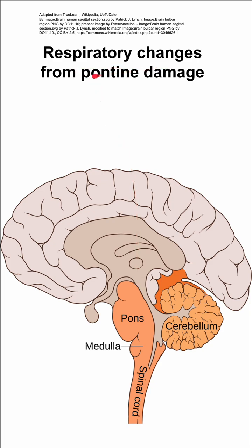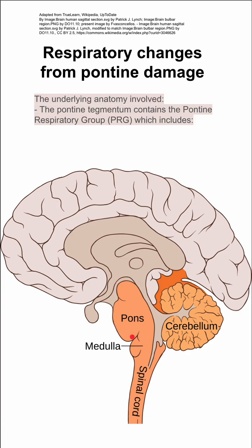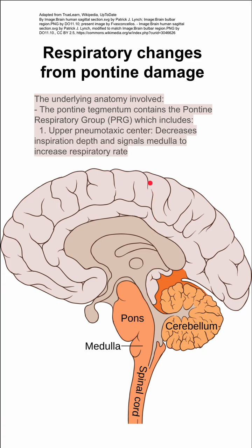These are respiratory changes you can get from pontine damage, or damage to the part of the brain known as the pons. First we should understand the underlying anatomy. The pontine tegmentum contains the pontine respiratory group, which includes the upper pneumotaxic center, which decreases inspiration depth and signals the medulla to increase respiratory rate.